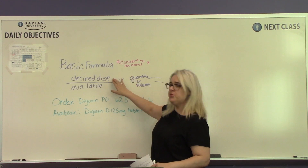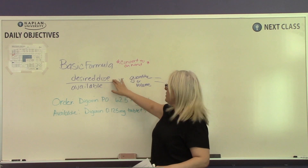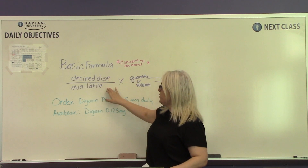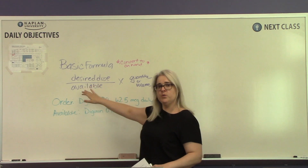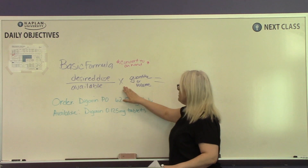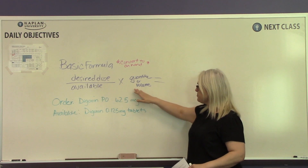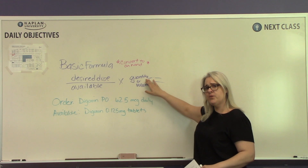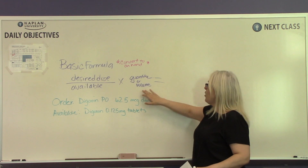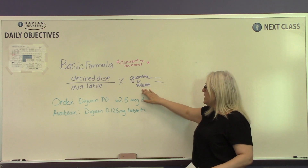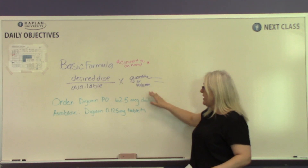What you're going to do is put the desired dose on top, your available dose on the bottom, and then multiply that by quantity if we're talking tablets, or volume if we're talking milliliters.